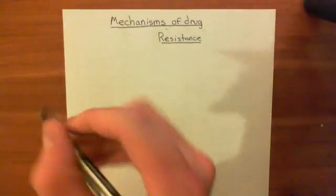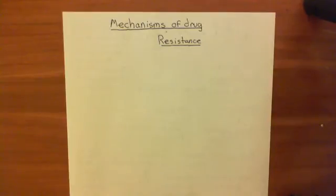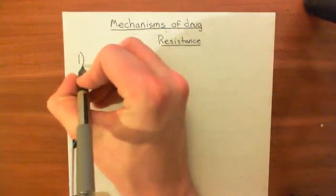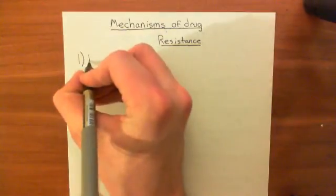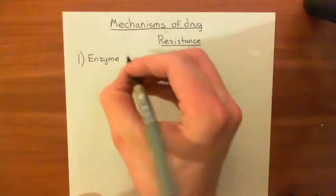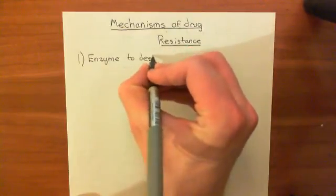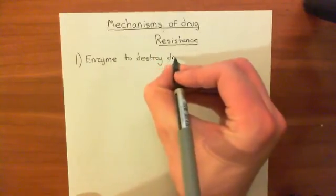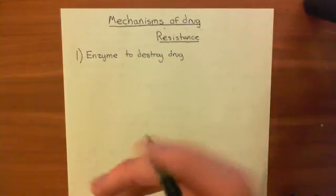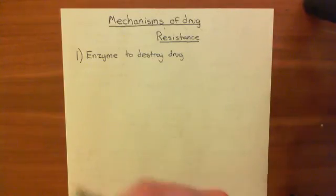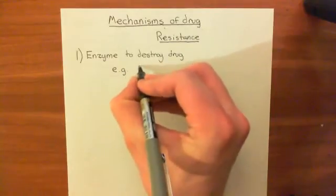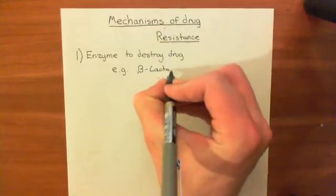There are roughly speaking five distinct mechanisms by which bacteria can develop resistance to our drugs. The first mechanism is by creating an enzyme which is going to destroy the drug molecule. The archetypal example of this is the beta-lactamase enzyme, which is made by many species of bacteria to degrade penicillin antibiotics — and in fact other beta-lactam antibiotics as well. So beta-lactamase breaks down beta-lactam antibiotics.